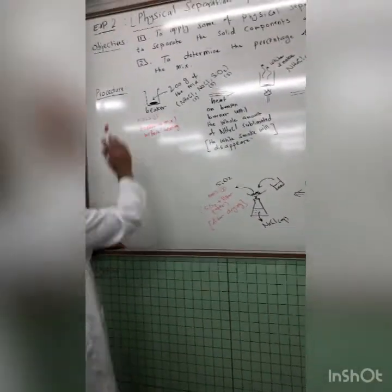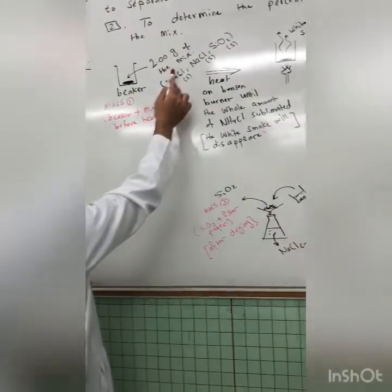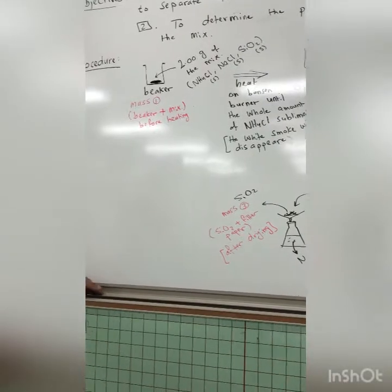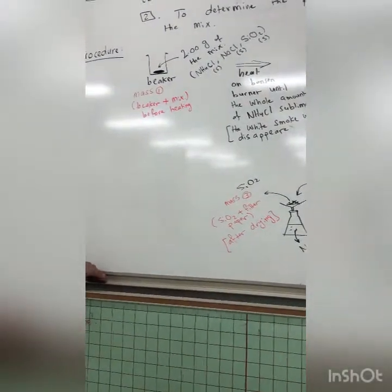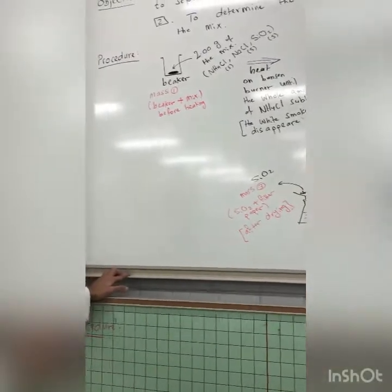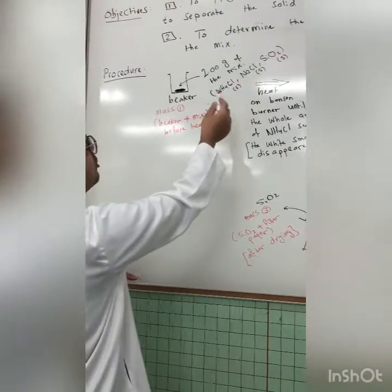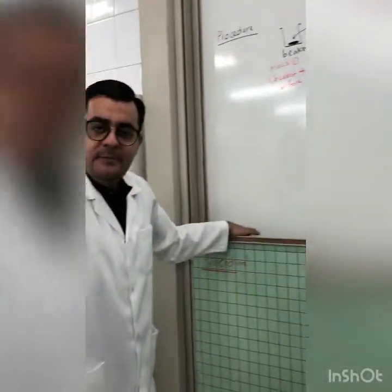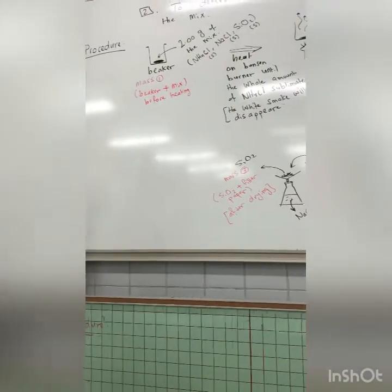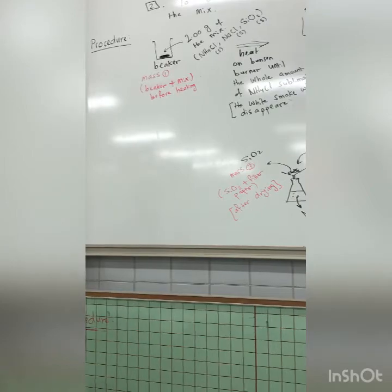This step is already done — I have already weighed two grams of our mixture which consists of three solid components. The first is NH4Cl — ammonium chloride. The second is NaCl — sodium chloride. The third is silicon dioxide (SiO2) — sand. So we are mixing fertilizer (ammonium chloride), table salt (sodium chloride), and sand (silicon dioxide).